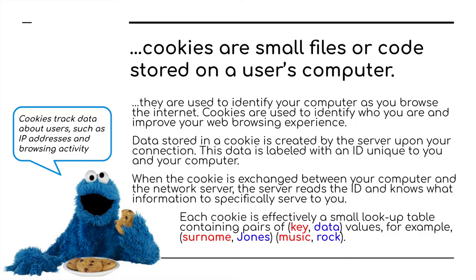Each cookie is effectively a small lookup table, like a little database containing pairs — a key, a field and the data within that field. For example, surname Jones, who you are, and then maybe what you like — what your interest is, what music you like listening to — in this example, rock music.